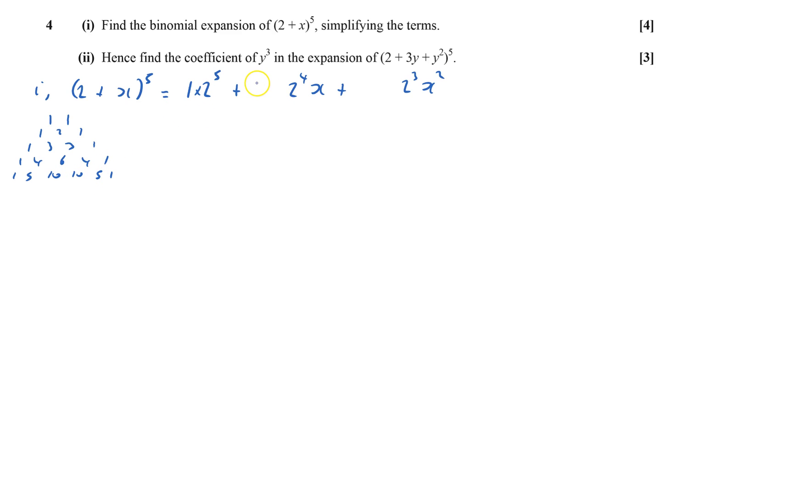So that gives me 1 for the first one plus 5 for the second one plus 10 for the third plus 10 for the fourth, and that'll be 2 squared and 3 x's, and then plus 5 times 2 times x to power 4, plus, and the last one's just one of them, and all of those are now x's. So that will give me 32 plus 80x plus 80x squared plus 40x cubed plus 10x to power 4 plus x to power 5.